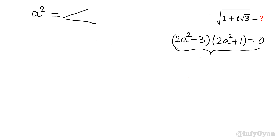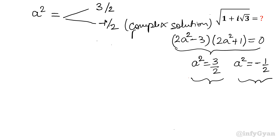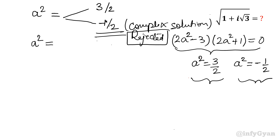From the first bracket, a squared equals 3 over 2. From the second bracket, a squared equals negative 1 over 2. Since a squared being a negative number means a complex or imaginary solution, we reject a squared equals negative 1 over 2. The accepted solution is a squared equals 3 over 2.